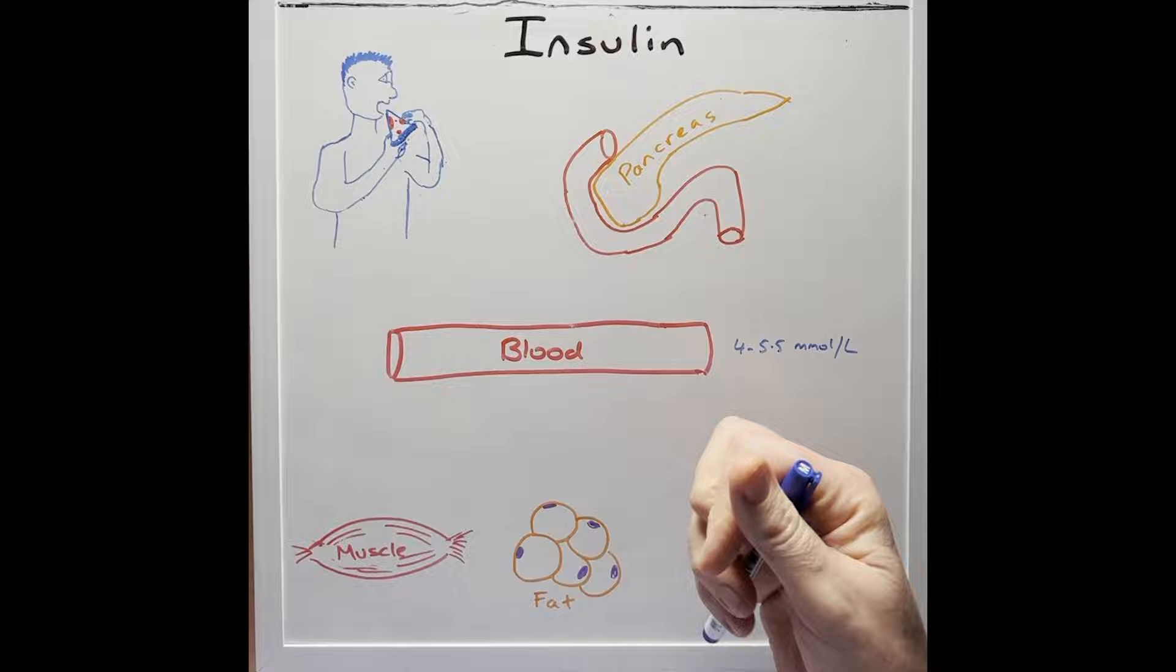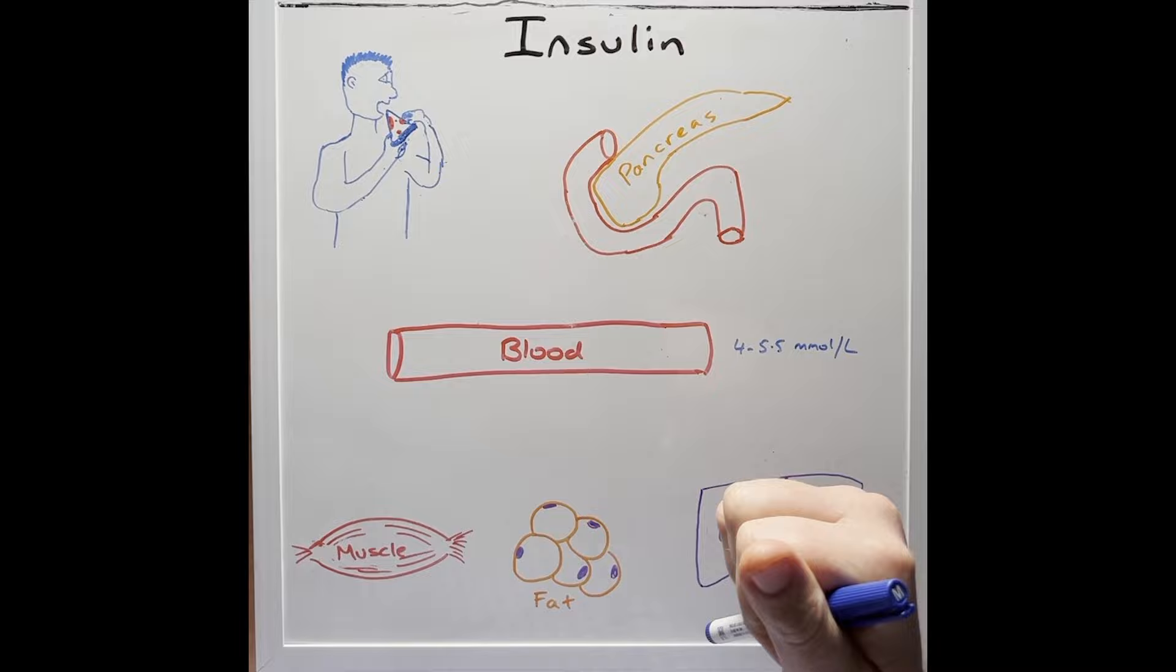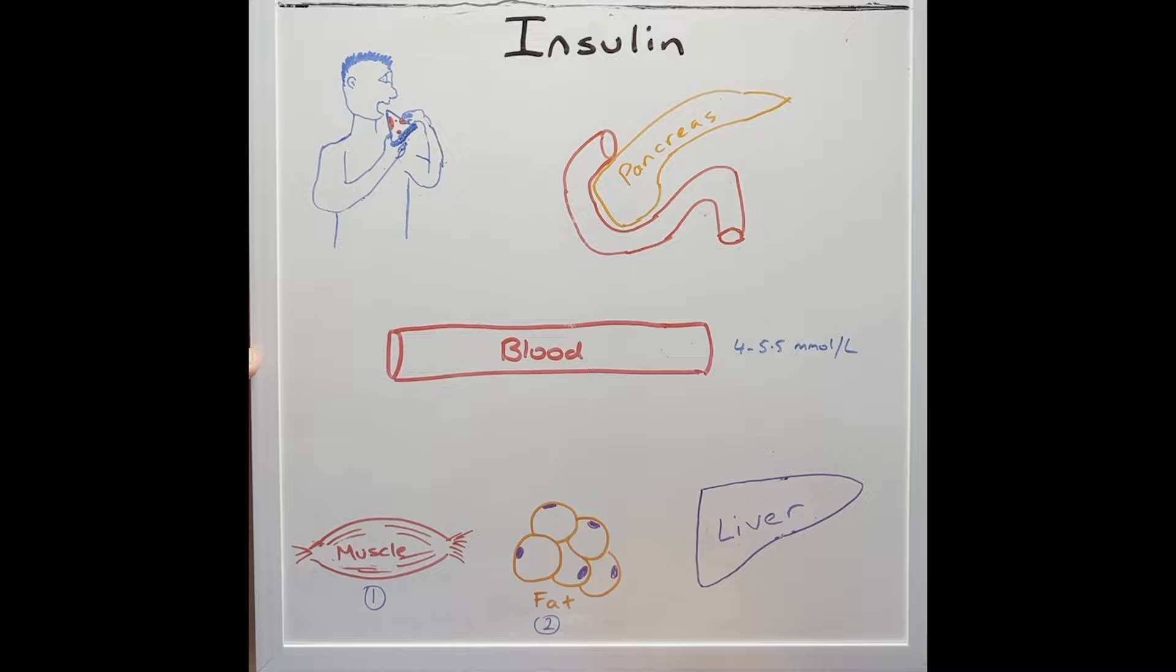Insulin is a hormone that is produced by the pancreas to help regulate blood levels of glucose, amino acids and fats after a meal. It does this by having a strong effect on three main organs.